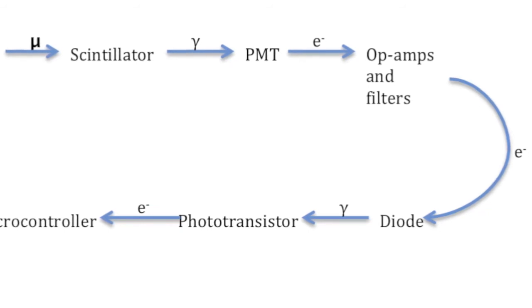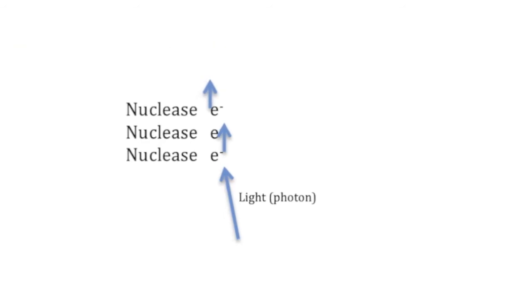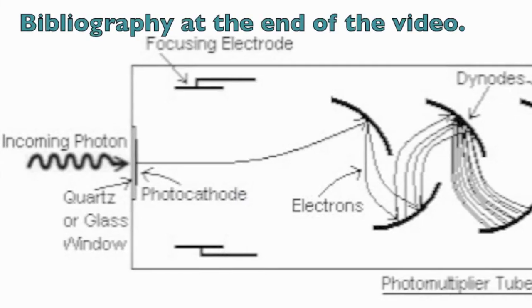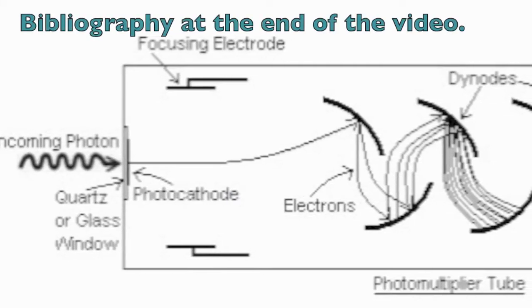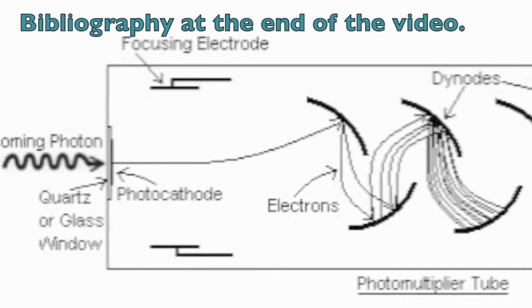The way the photomultiplier tube works is that the light strikes the photoelectric material, produces an electron, and this electron is actually focused by a focusing electrode. Not all photomultiplier tubes have this, and I don't believe mine does.